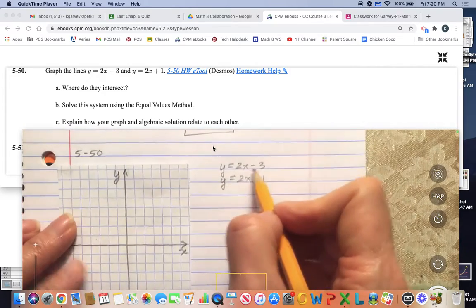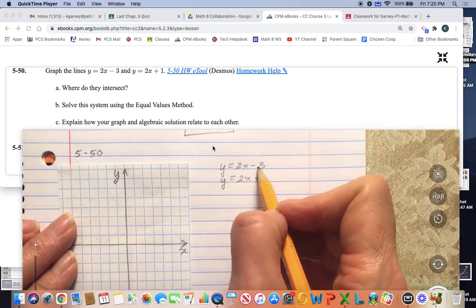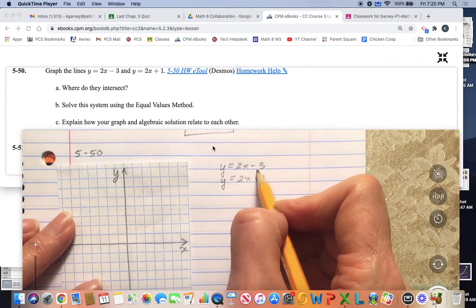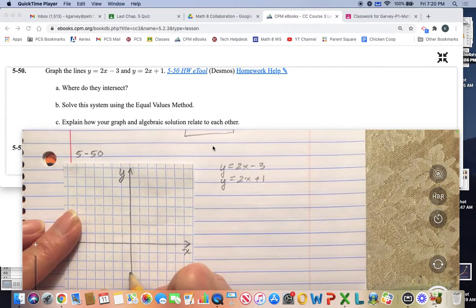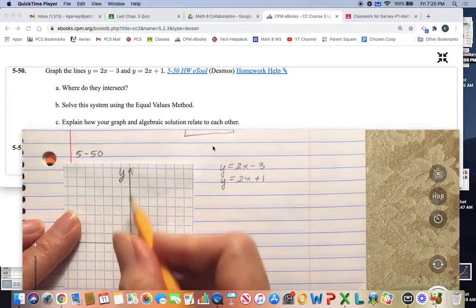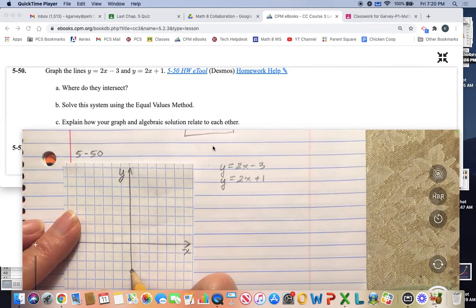And the second line is y equals 2x plus 1. All right, so the easiest way to start graphing from a rule is to find the y-intercept, which in this case is negative 3. So I'll find that on my graph by going down from the origin on the y-axis. And there's negative 3.